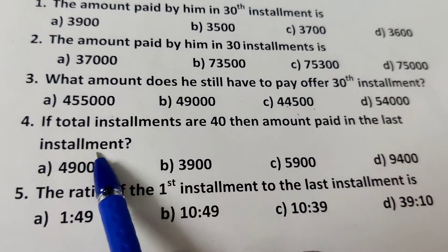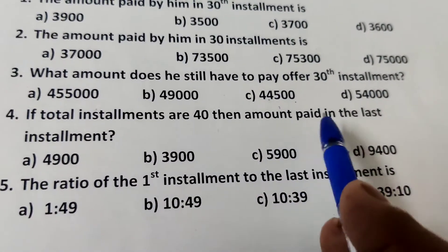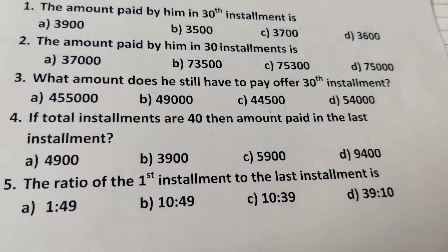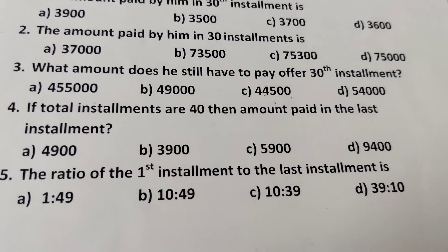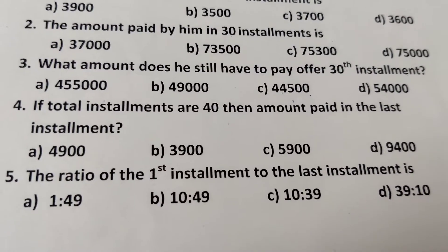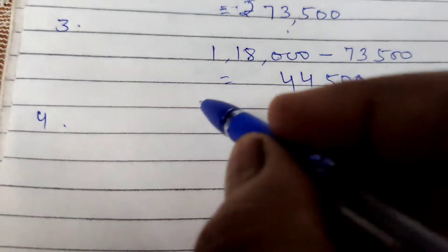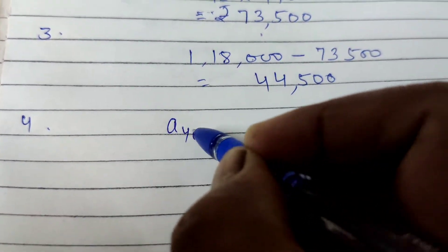Next question. Total installments are 40. Then the amount paid in the last installment. If total installments are 40, how much in last installment? We have to find 40th term, A40.